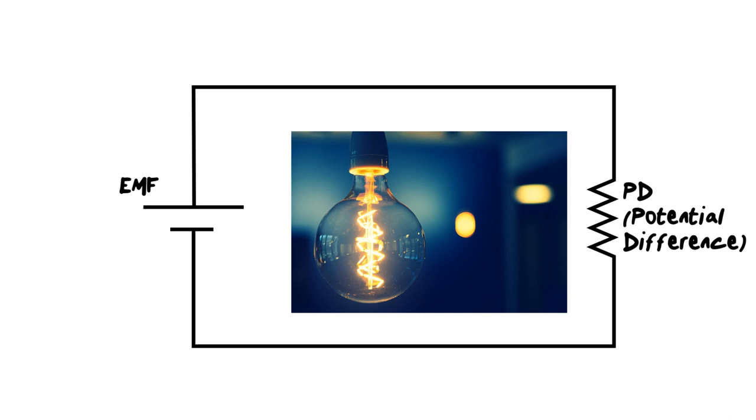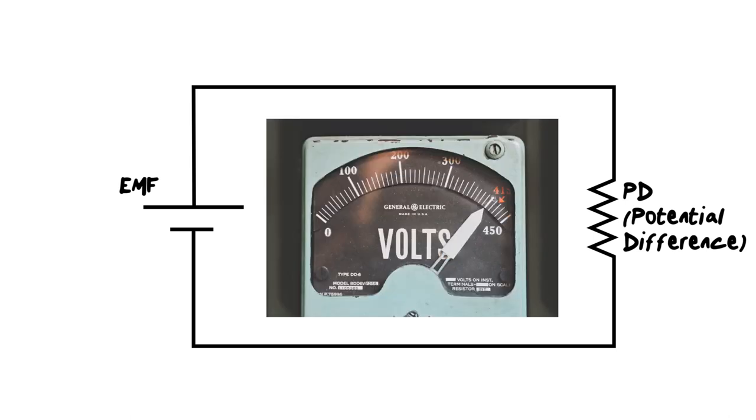Now again, the thing that gets confusing is they're both measured in volts. However, EMF is the voltage used to create some sort of energy, and potential difference is the volts that is being used by the source. So there you go. That's the difference between EMF, electromotive force, and PD or potential difference. Again, both measured in volts.